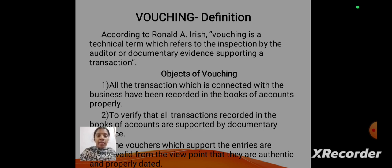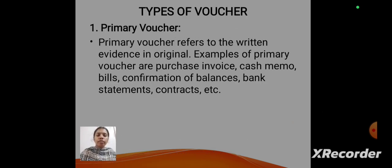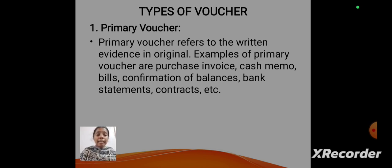These are the objects of vouching. Types of voucher: Primary voucher is a type of voucher — it refers to the written evidence in original. Examples of primary vouchers are purchase invoice, cash memo, bills, confirmation of balances, bank statements and contracts.